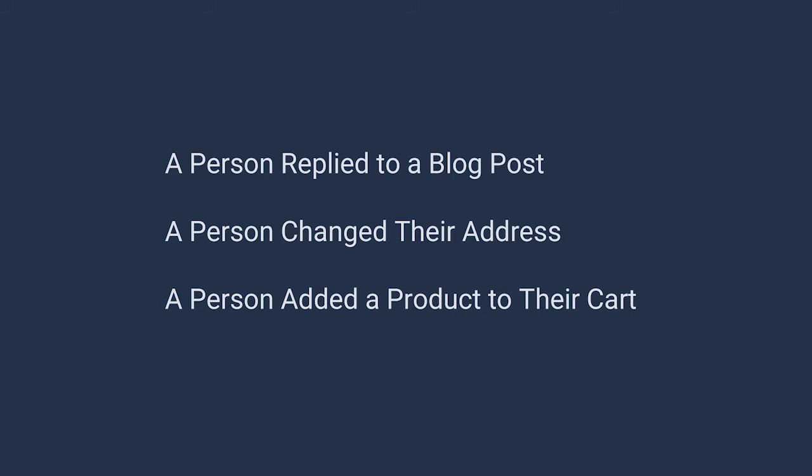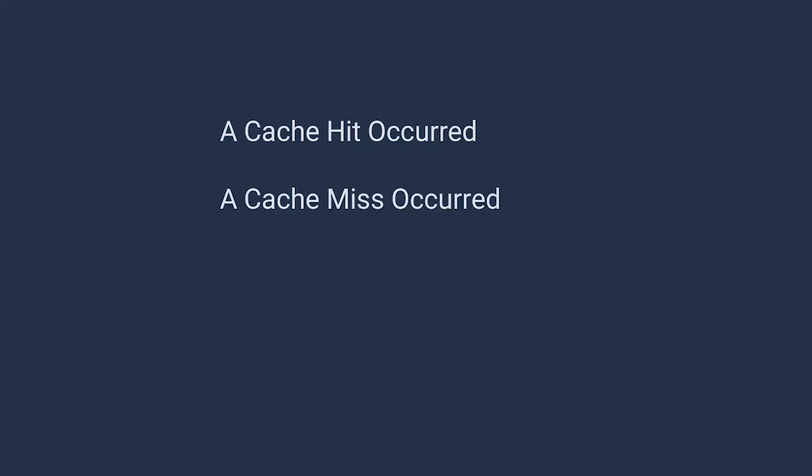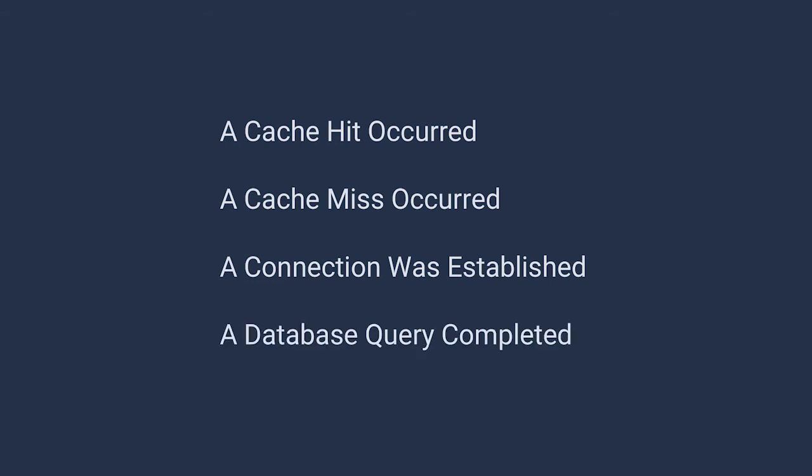Something interesting happened that allows us to pursue our interests, and in our economy this generally means providing business value. When building business software, domain events are things that have happened that are relevant to our business interests. Naturally, there are other things happening in our systems, including other kinds of events being raised — events that describe things like cache hits or cache misses, connections being made, database interactions being completed. While these things are important in that they are technical implementation details necessary for our systems to function, they're not about the business. They're not about our business domain.